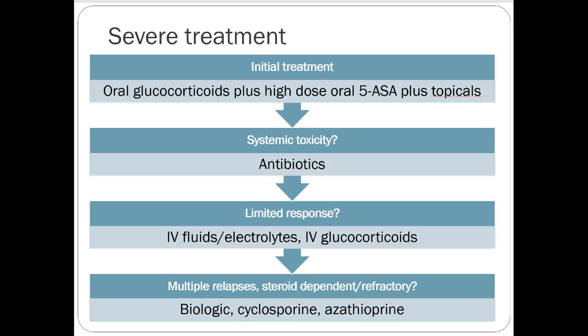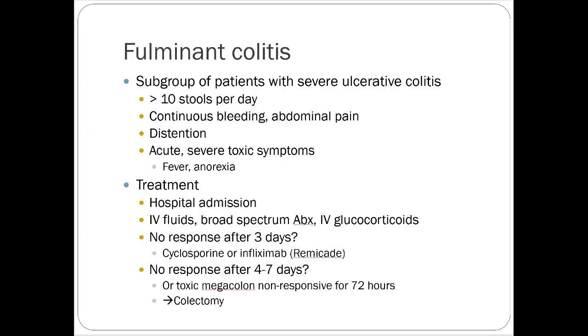For severe ulcerative colitis, treatment includes oral corticosteroids and high-dose 5-ASA. With systemic toxicity, admit the patient and treat with IV steroids. Fulminant colitis is a subgroup with very severe UC treated essentially like sepsis: hospital admission, broad-spectrum antibiotics, and probably surgical evaluation or intervention.